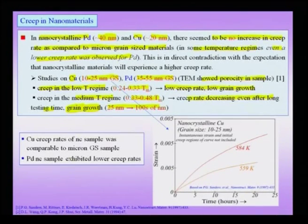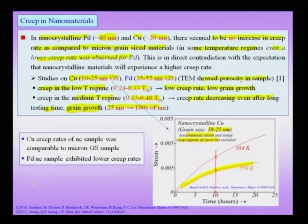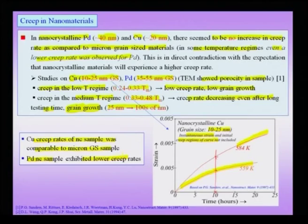The plot for copper with grain size 10 to 25 nanometers shows instantaneous elastic strain removed and initial creep regions excluded. At lower temperatures you accumulate lower strain at a given time; at higher temperatures you accumulate higher strain, as expected. Additionally, creep strains continuously build up even after many hours of testing. To summarize: in copper the creep rate in the nano-crystalline sample was comparable to micron grain size samples, but in palladium nano-crystalline samples a lower creep rate was observed at certain temperature regimes — extremely surprising results for creep of nano materials.